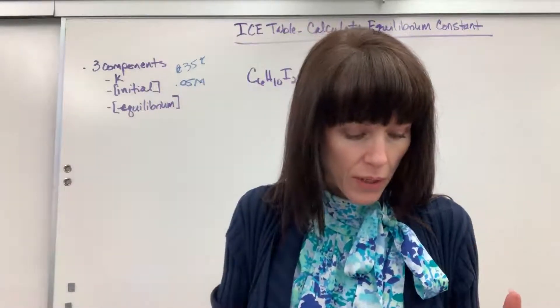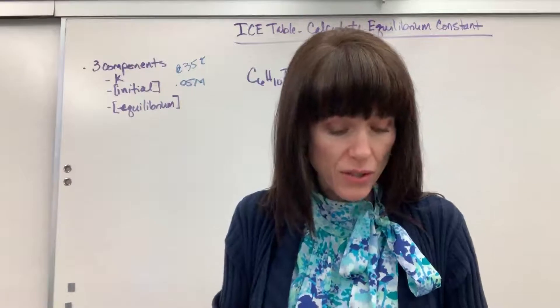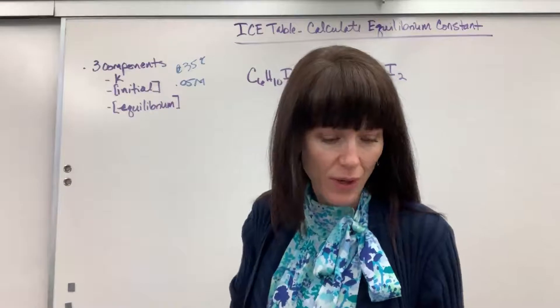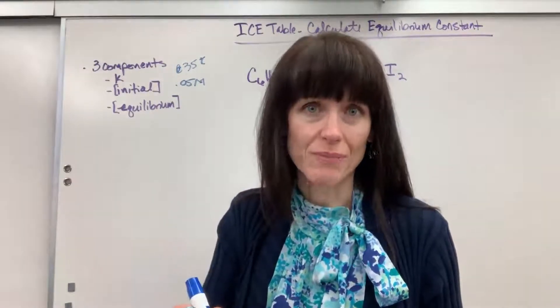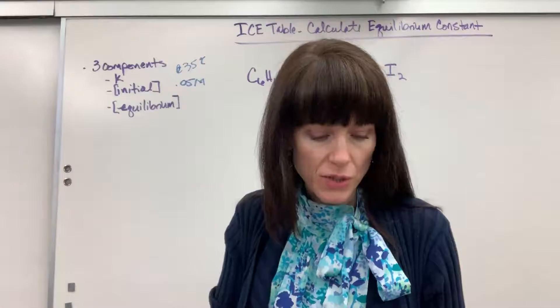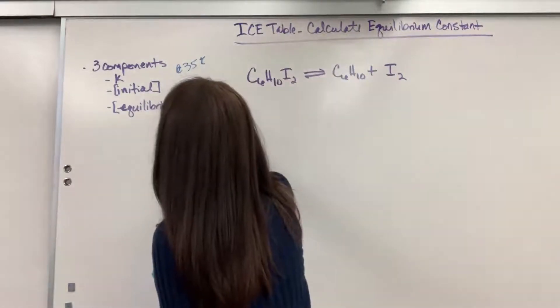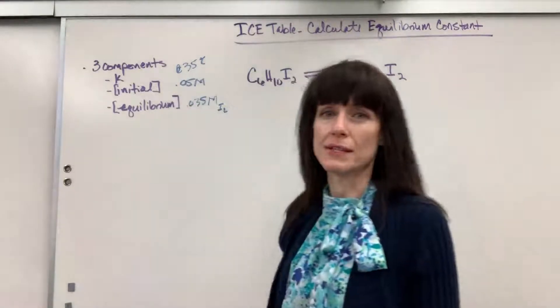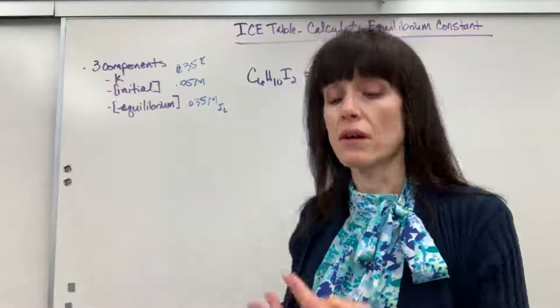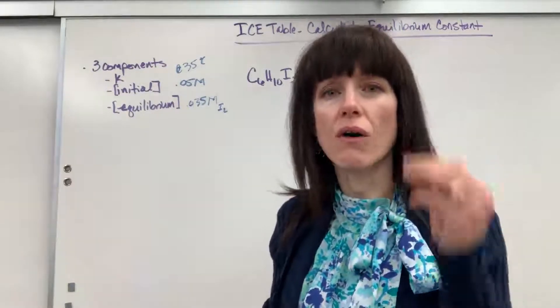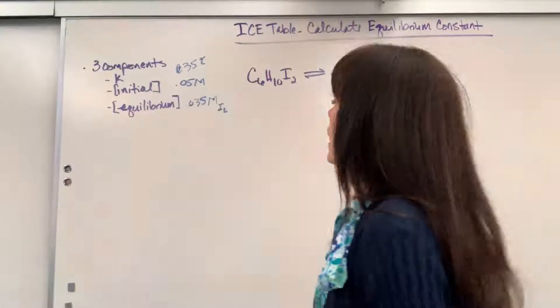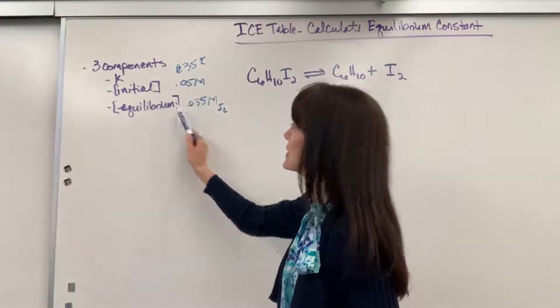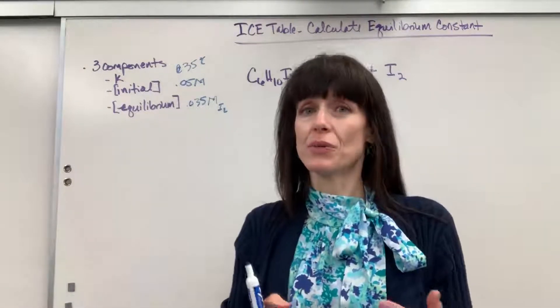So it comes to equilibrium at 35 degrees C, and then the concentration of just the iodine at equilibrium. And I want to stress this, it says has come to equilibrium. Big clue there. The concentration of the iodine is 0.035 molar. And that was just for the iodine, I2. So as I look at this, knowing that there are always three components, you're always looking for those three components. They didn't give us K.